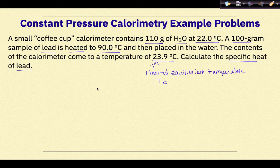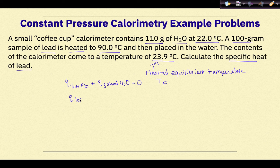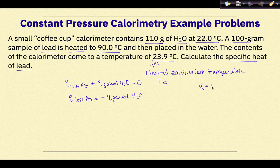The formula we're going to use is: the amount of heat lost by the lead plus the amount of heat gained by the water equals zero. So the heat lost by the lead equals the negative of the heat gained by the water. Recalling that q equals m c delta T, we take both of these q's and replace them with m c delta T, using the information provided in our prompt.